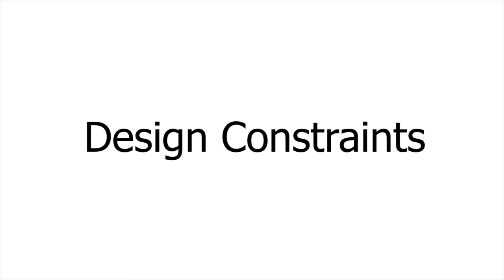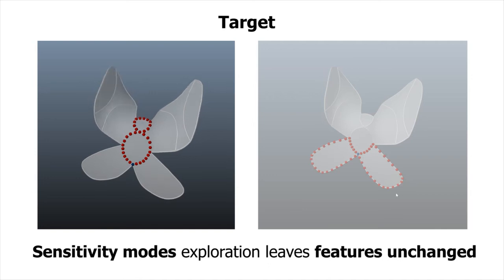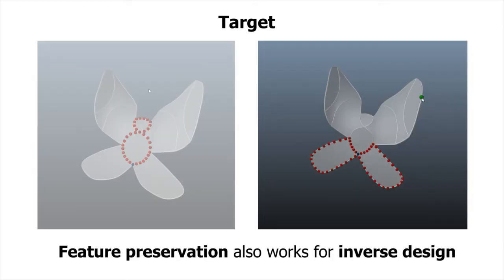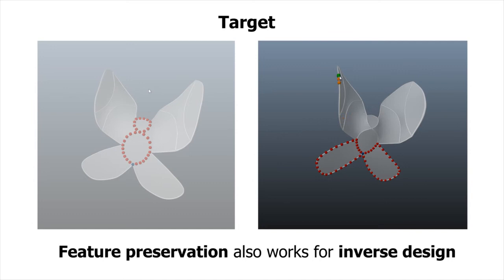Design constraints: In order to enforce hard constraints during the design process, we project the sensitivity matrix onto the feasible subspace. In this way, the user can directly explore sensitivity modes that leave constrained regions unchanged. Hard constraints are enforced during both inverse design and sensitivity exploration.